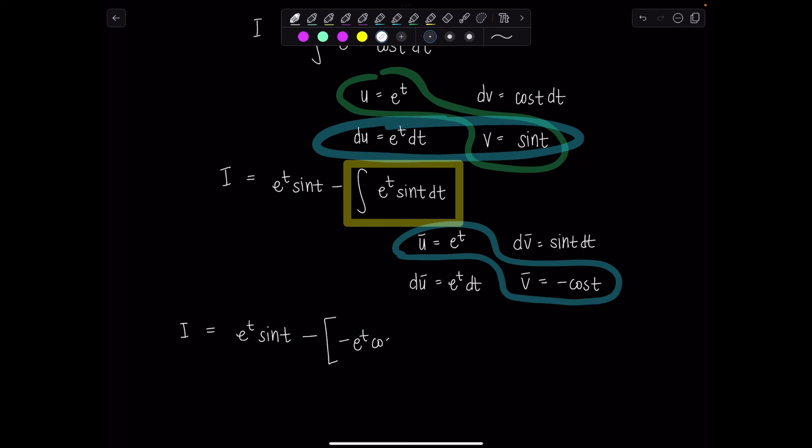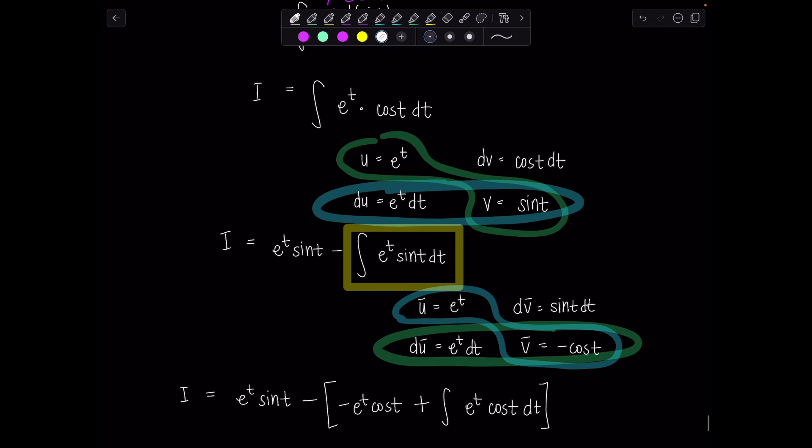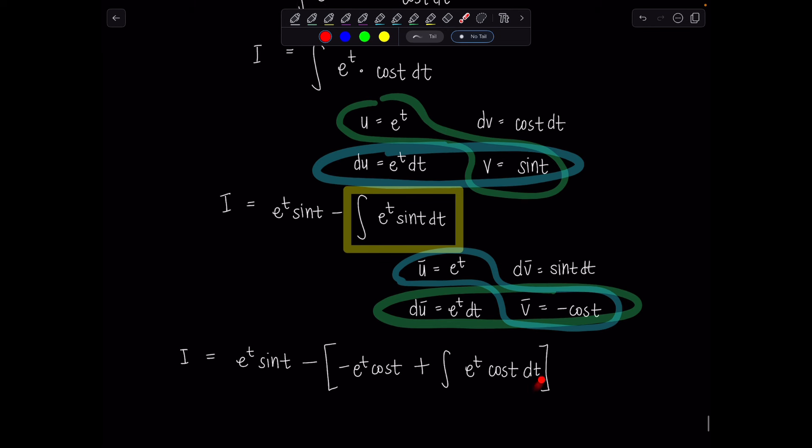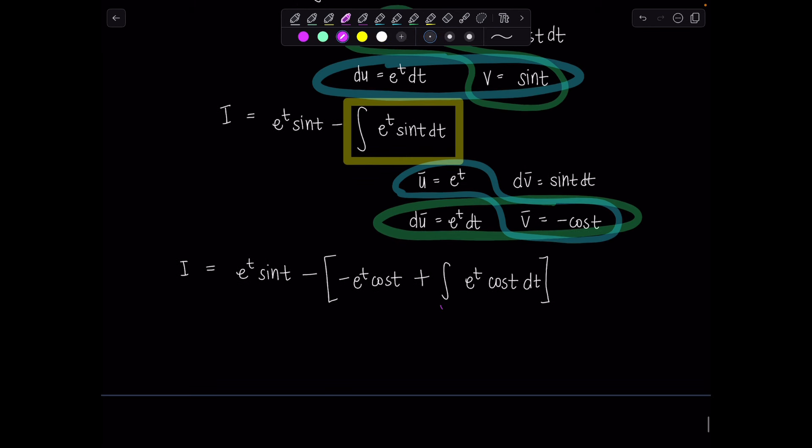So don't forget, i, my integral, is equal to e to the t sine t minus, and then all of this I'm going to replace with the by-parts formula. So we have as follows, negative e to the t cosine t minus integral of this product here, which is negative e to the t cosine t. So that's going to make this positive e to the t cosine t dt.